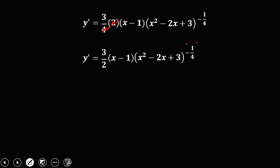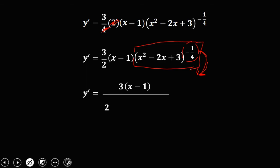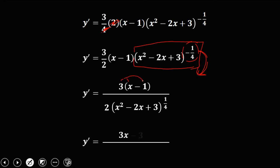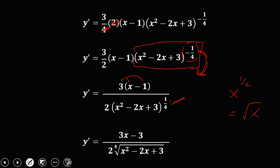Since the exponent is negative, bring it to the denominator to make it positive. The numerator becomes 3 times (x minus 1), and the denominator is 2 times (x squared minus 2x plus 3) to the power positive 1/4. Simplifying: the numerator is 3x minus 3. Since x to the power 1/4 equals the fourth root of x, we can rewrite: (x squared minus 2x plus 3) to the power 1/4 equals the fourth root of (x squared minus 2x plus 3). This is the final derivative.